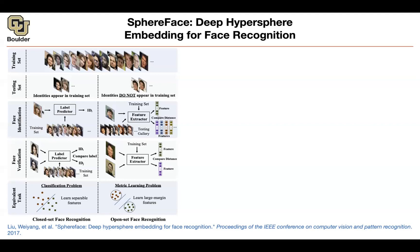Let's rephrase these classes of problems. Face identification: a new image comes in and you classify it to a particular identity — who is this person? For face verification, two images go in, perhaps of the same person or different people. You push them through your neural network, predict the IDs, and if the IDs are the same, these are the same people. This is the closed-set problem, and it's a much easier problem.